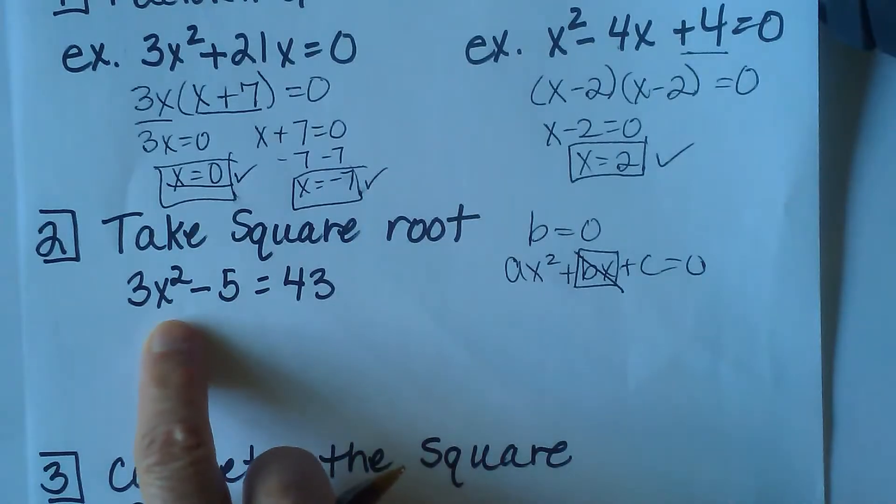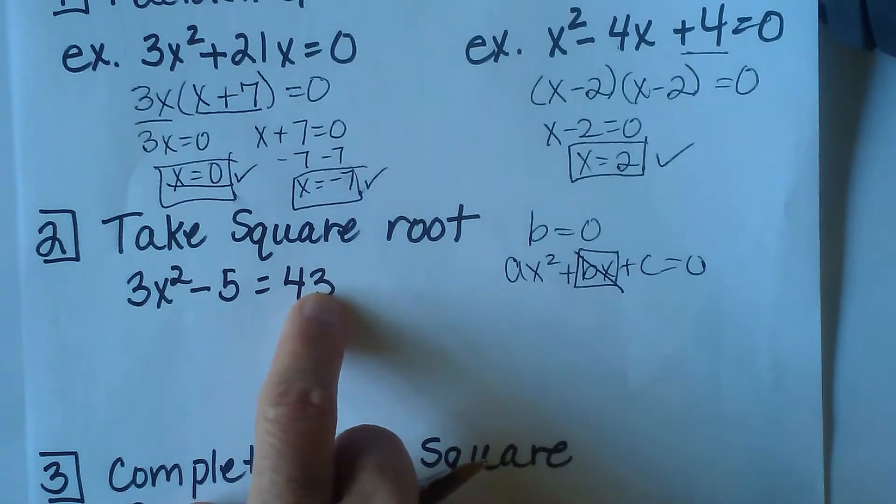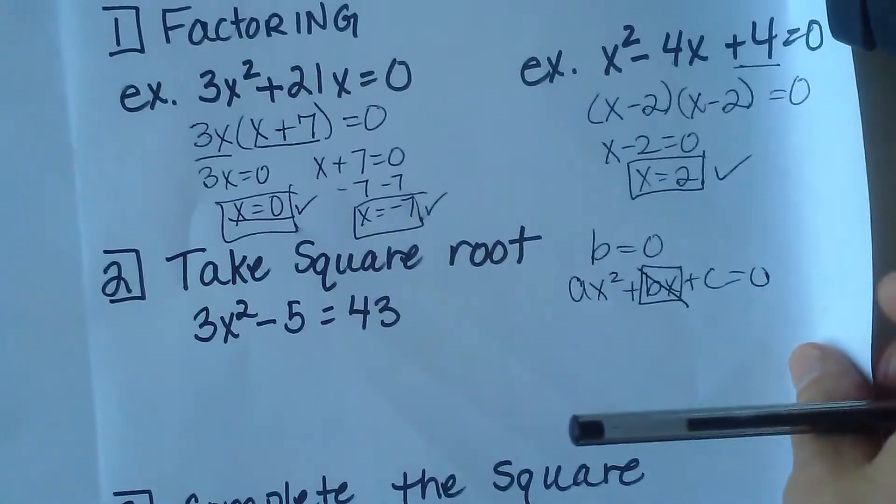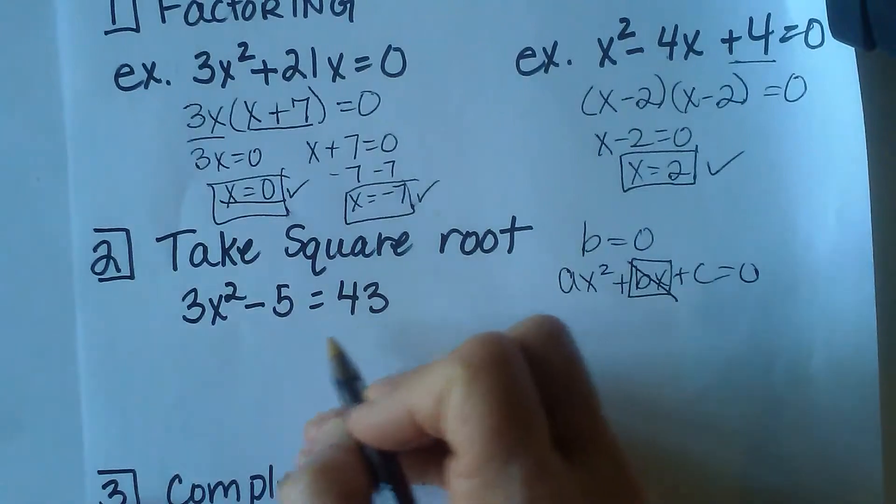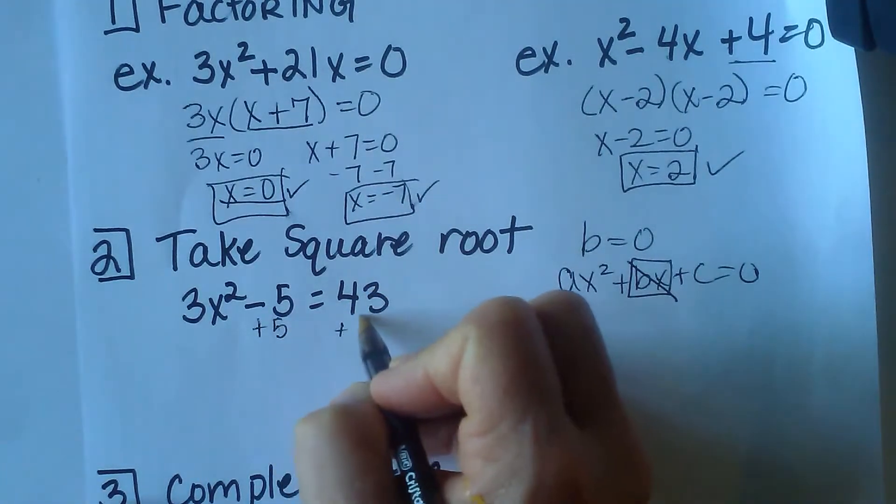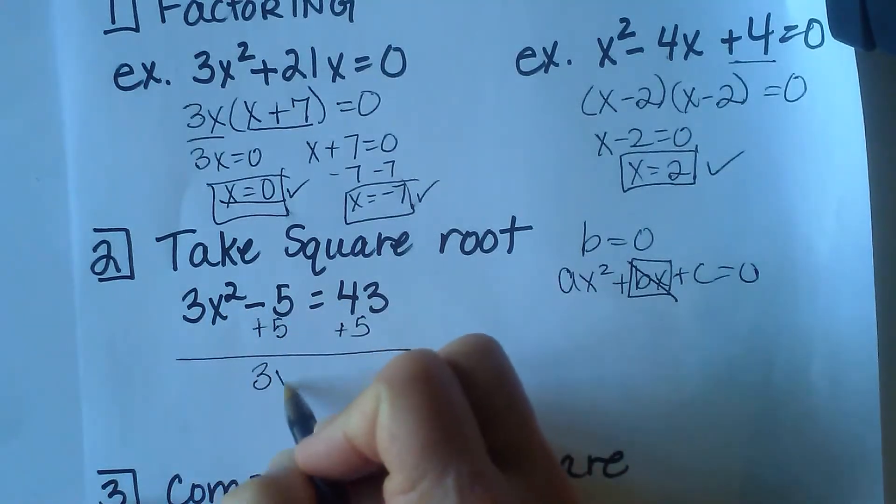If you notice in this problem, we have 3x squared, and then we have 5 and 43, and we don't have an x to the first power. So that's the best time to use the square root method. Let's solve by adding 5 to both sides. You want to isolate the x squared term to get the x by itself.